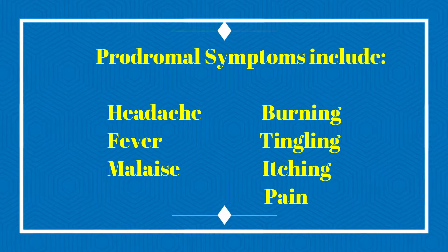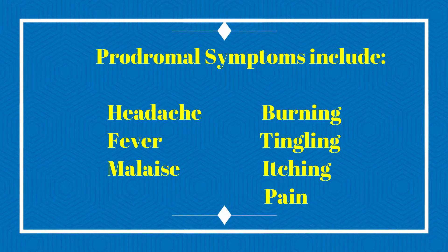There are often prodromal symptoms that can occur 2 to 3 days before the onset of the rash, and can include headache, fever, and malaise, or more localized symptoms such as tingling, burning, itching, or pain in the area. Physicians or patients are often baffled at this point, and the source of the pain usually becomes apparent only after the rash has appeared.